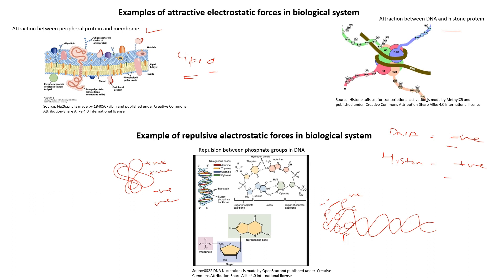To summarize: attractive electrostatic forces are found between peripheral protein and membrane, and between DNA and histone. Repulsive electrostatic forces are seen within DNA itself, because the phosphate groups are negatively charged and repel each other. This situation can also arise in proteins when like-charged amino acids — both positive or both negative — are positioned facing each other.